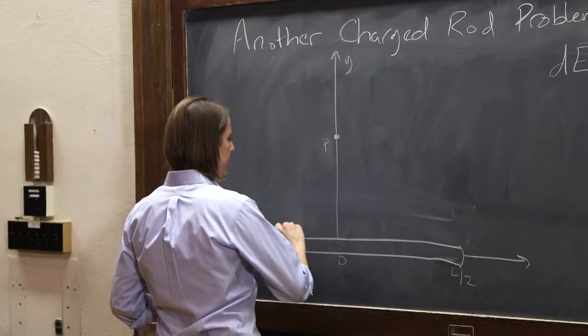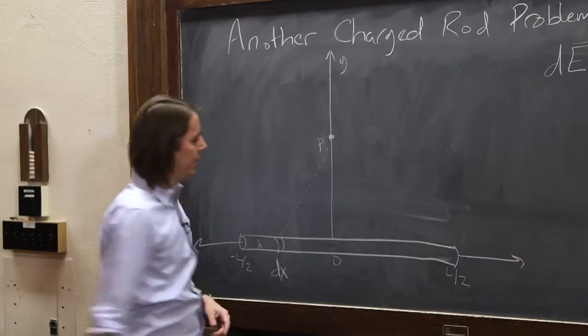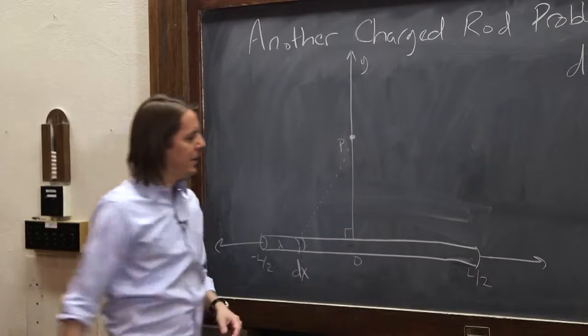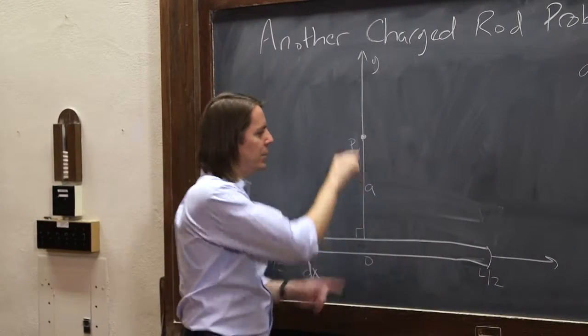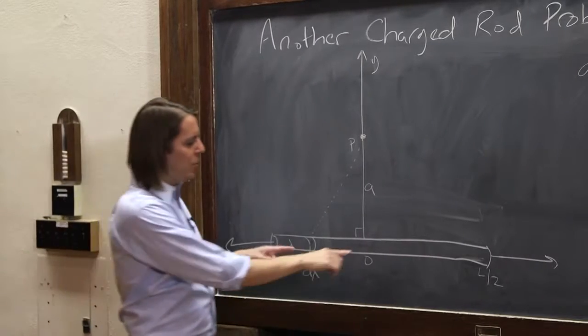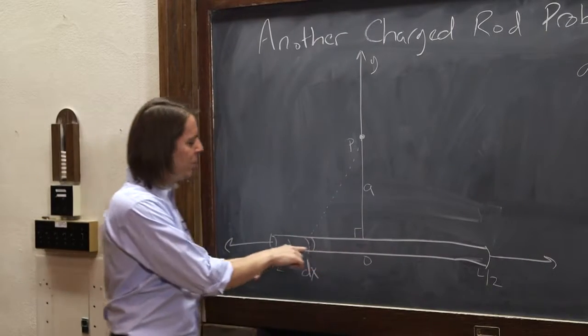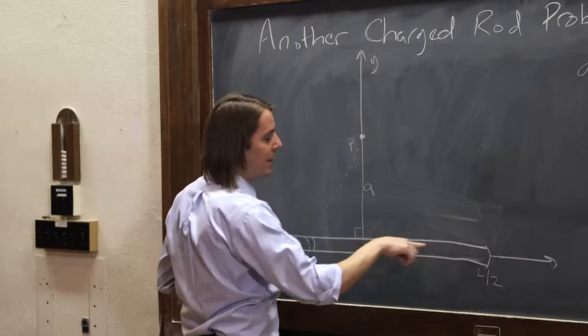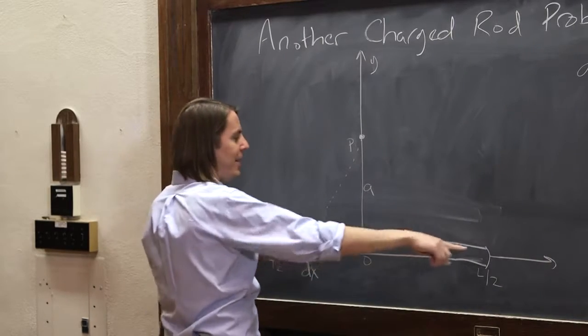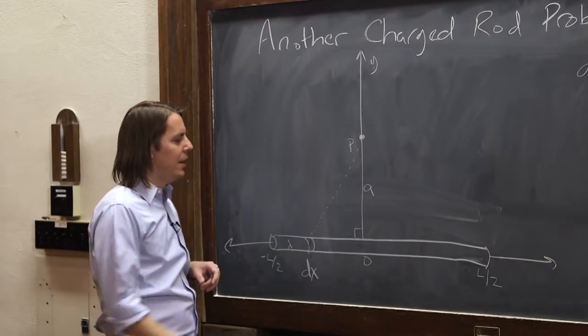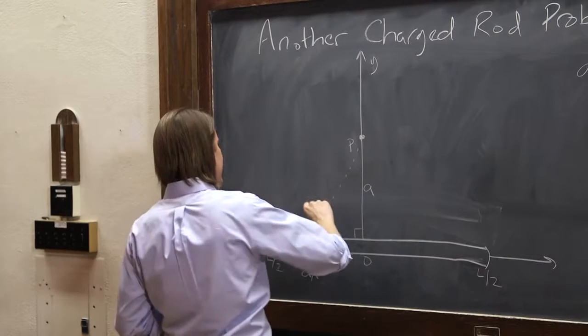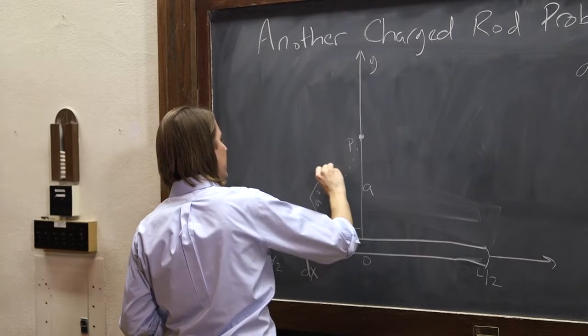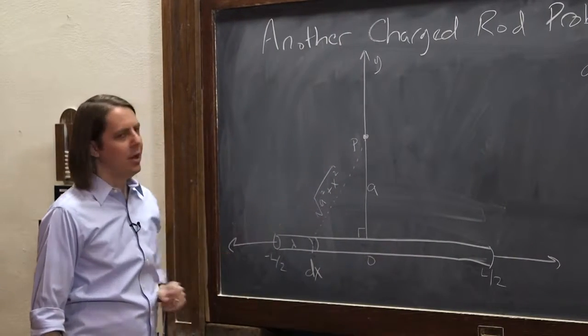And now we have to think about the distance. What is the distance from dx to P? Well, we can draw a dotted line like that and see that it's a right triangle. That helps, because we know this side of the triangle, a. We know it's a distance a from the axis. And we know this side of the triangle because we know the x position of all the dx's. Here it's actually sitting at negative x. You could also have it here at positive x. We're going to think about it everywhere between minus l over 2 and l over 2.